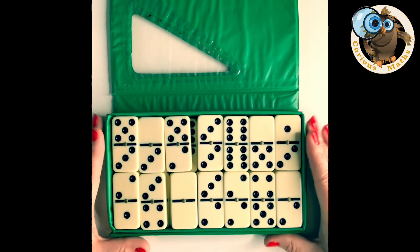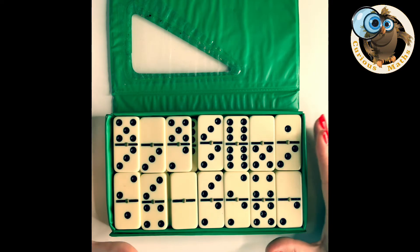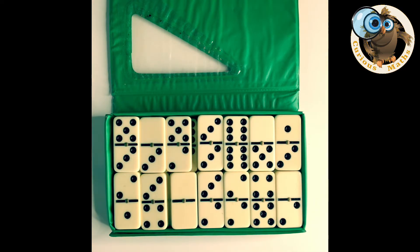So because it's a double six set there are 28 dominoes in this pack and I think this is a really good size for playing games between two and four people. Right so as you notice dominoes are split in half, these are called pips and these pips represent the value of each of the parts of the domino.